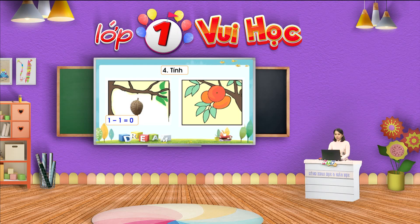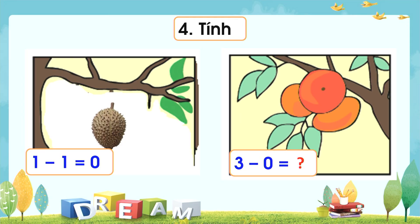Chúng ta quan sát và thực hiện tiếp phép tính nhé các em. Trên cành cây có ba quả, không rơi xuống quả nào hết. Trên cành cây vẫn còn ba quả, cô có phép tính 3 trừ 0 bằng 3.